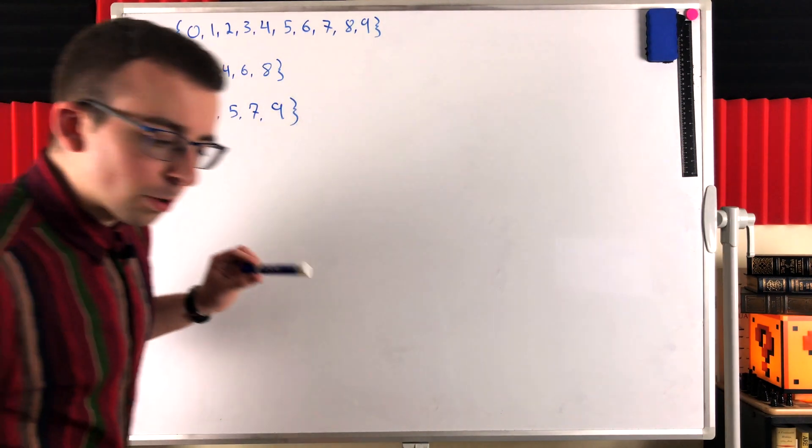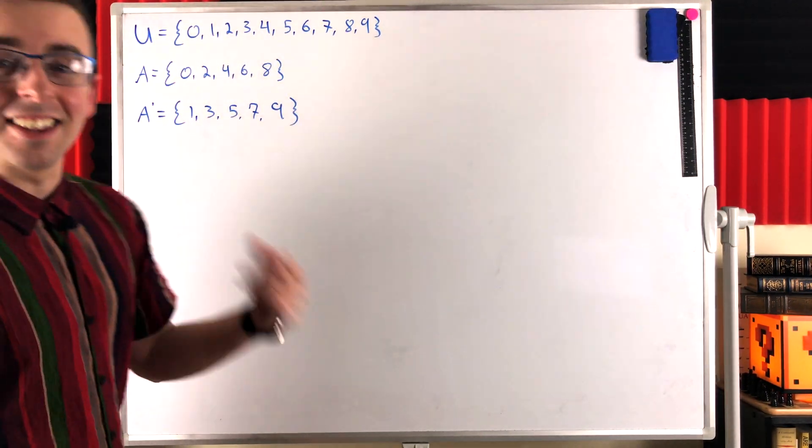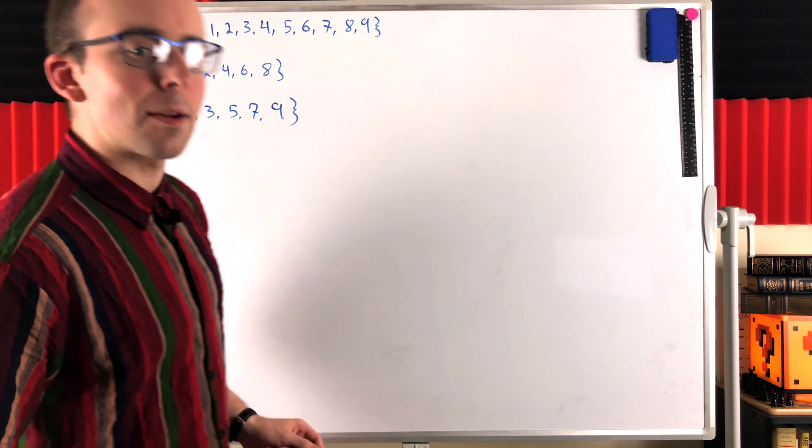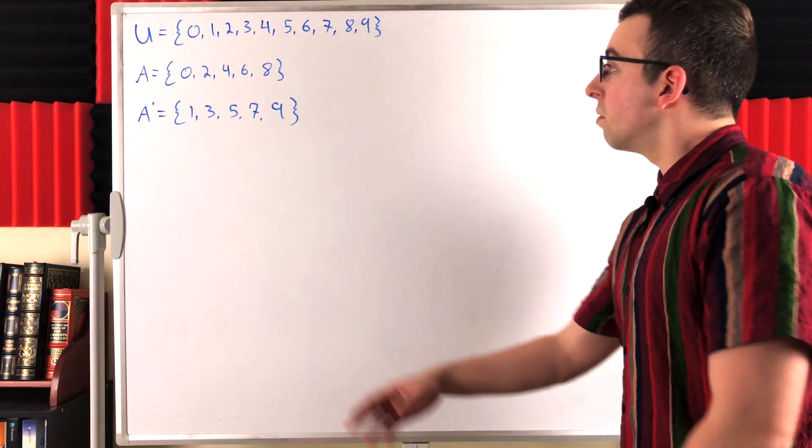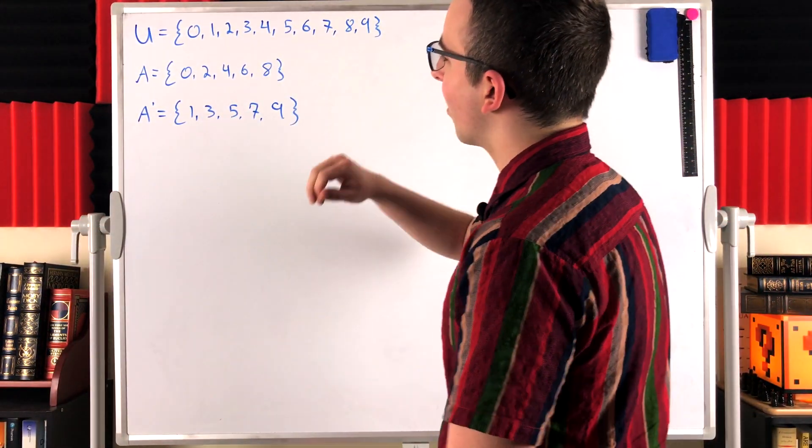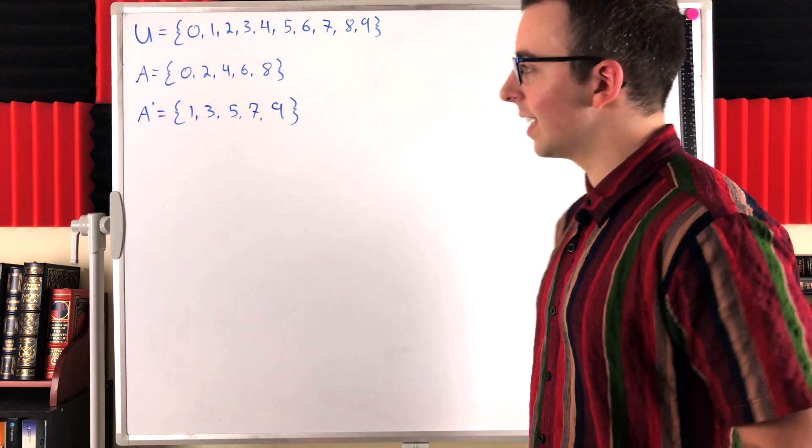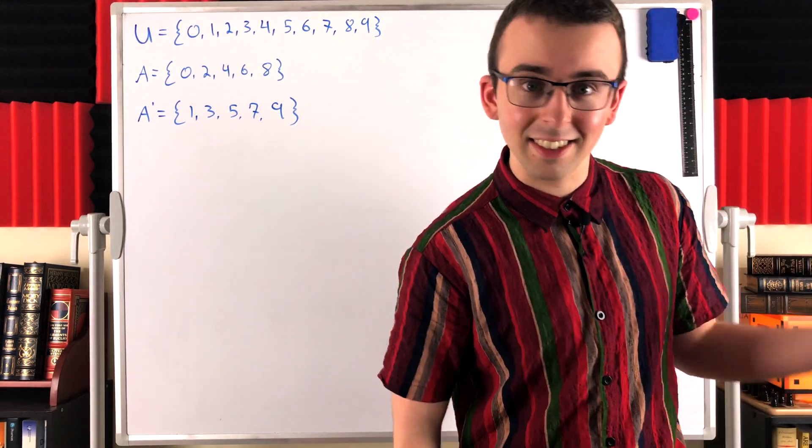Now without any further ado, let's quickly look at this example. Here's a universal set. It contains the numbers 0 through 9. Then we've got this subset of the universal set called A, which contains the even numbers 0, 2, 4, 6, and 8.